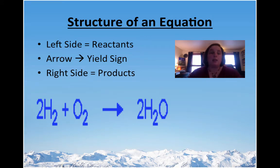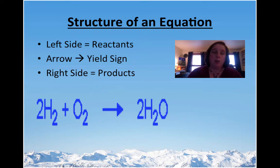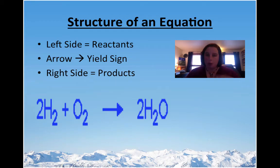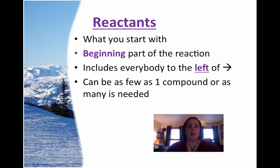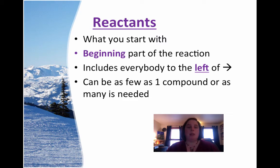You can have 1, 2, 5, 8, or 10 reactants — it doesn't matter. We never say 'arrow'; that is not cool — we say 'yields.' On the right-hand side, we call those products, and again you can have 1, 2, 5, 8, or 10. If you're on the right side, you're a product; if you're on the left side, you're a reactant. Reactants are what you start with — the beginning part of the reaction. It includes everybody to the left of the arrow, and it can be as few as one compound or as many as needed.